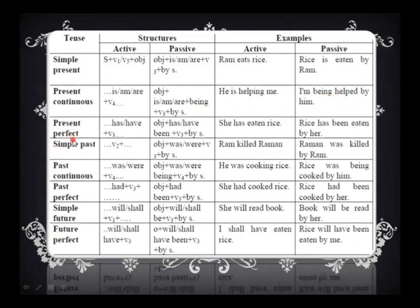Next, we have the perfect tense. The auxiliary verbs used are 'has' or 'have' along with 'been.' 'Been' indicates our perfect tense. For example: 'She has eaten rice' becomes 'Rice has been eaten by her.' So these are the structures of your active and passive voice. In your continuous tense, you use 'being'; in your perfect tense, you use 'been' — B-E-E-N. Don't get confused.